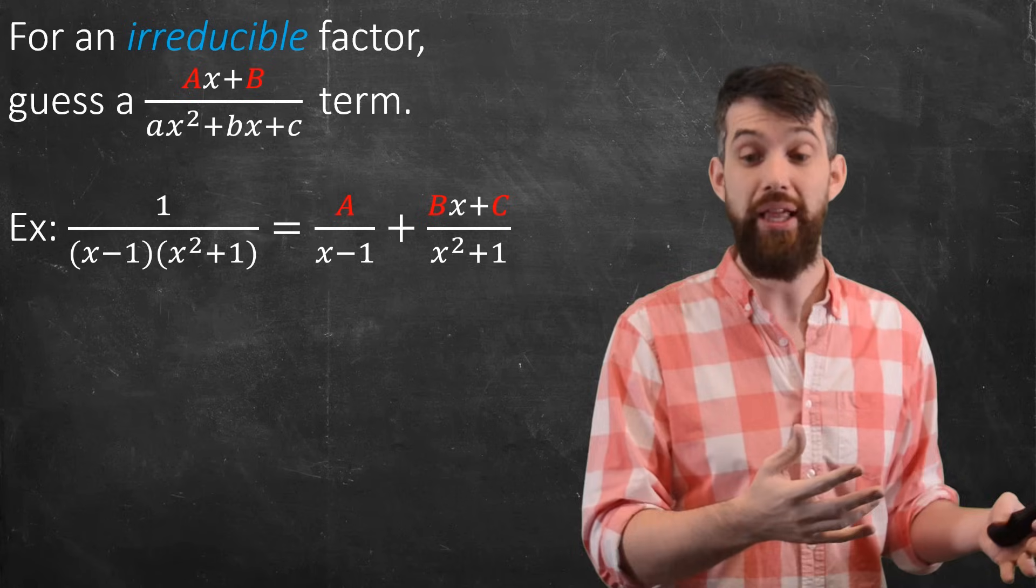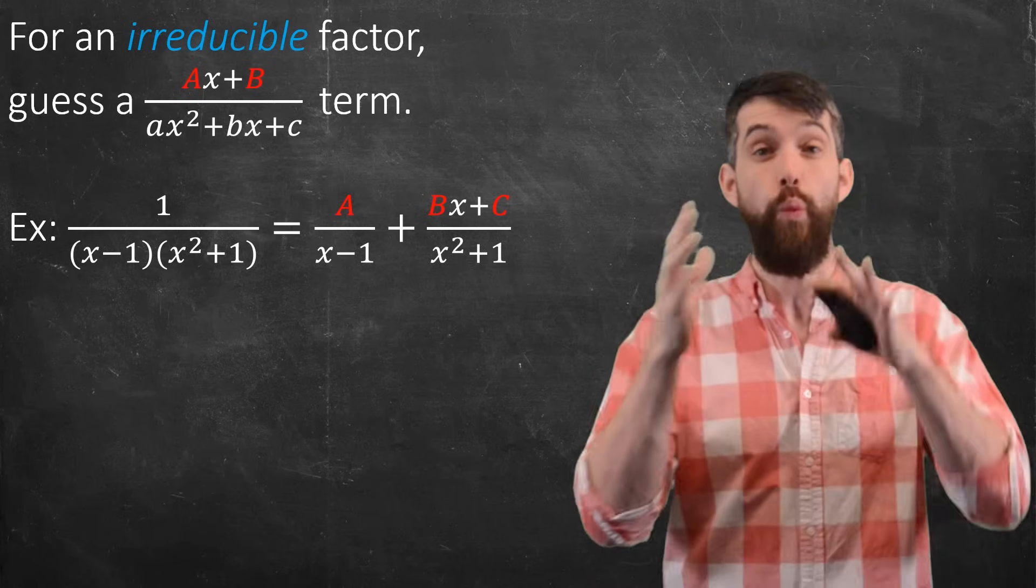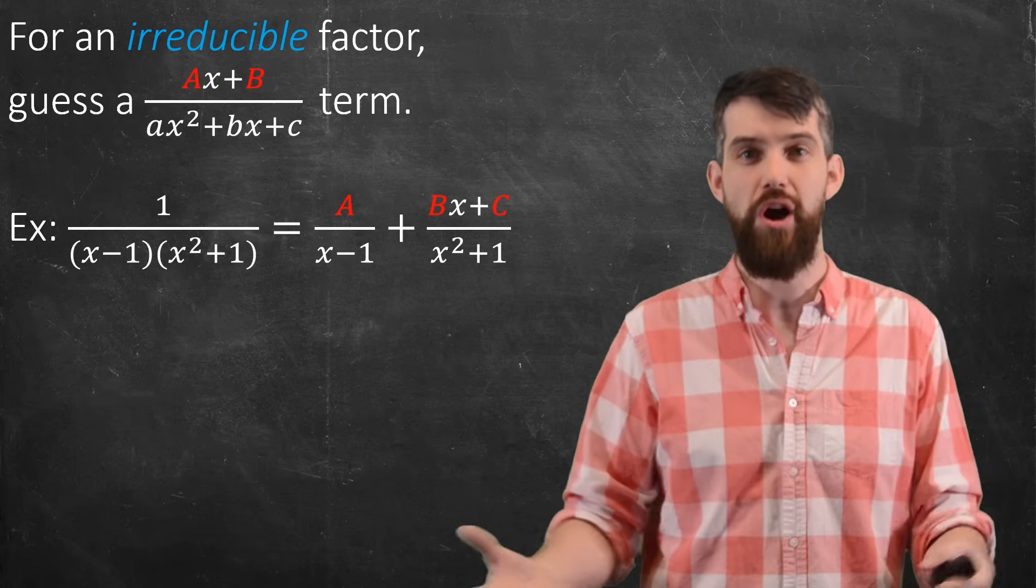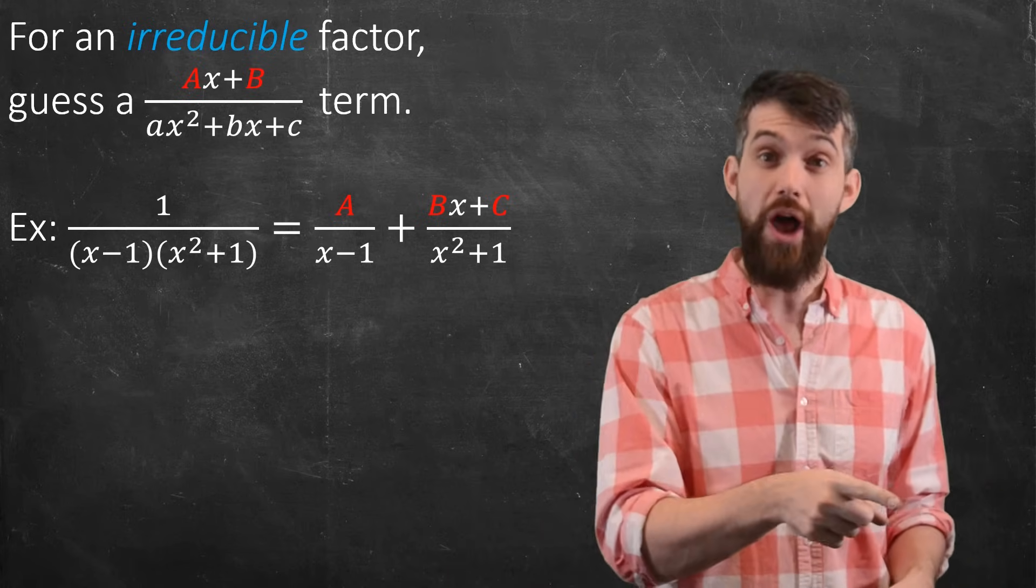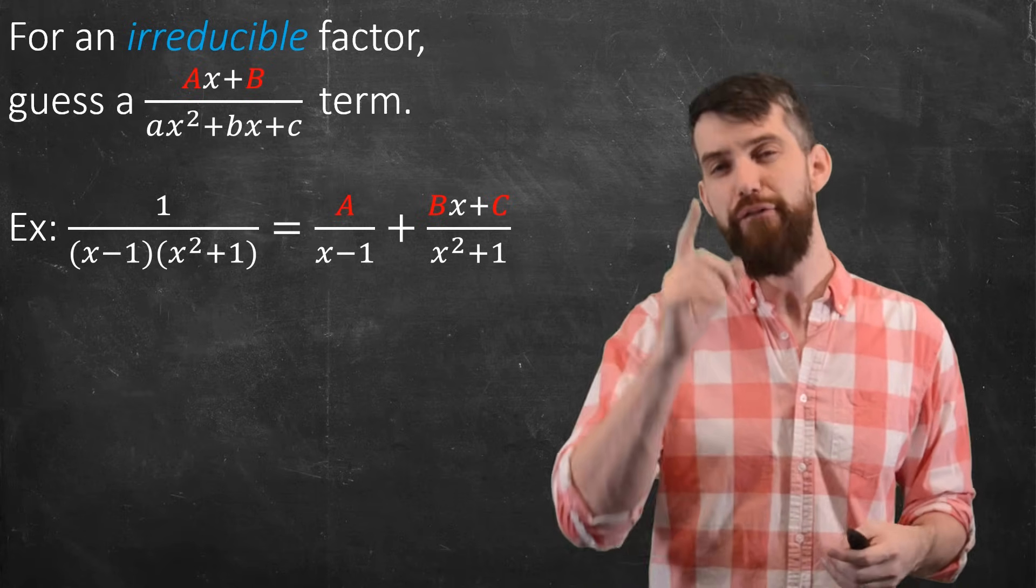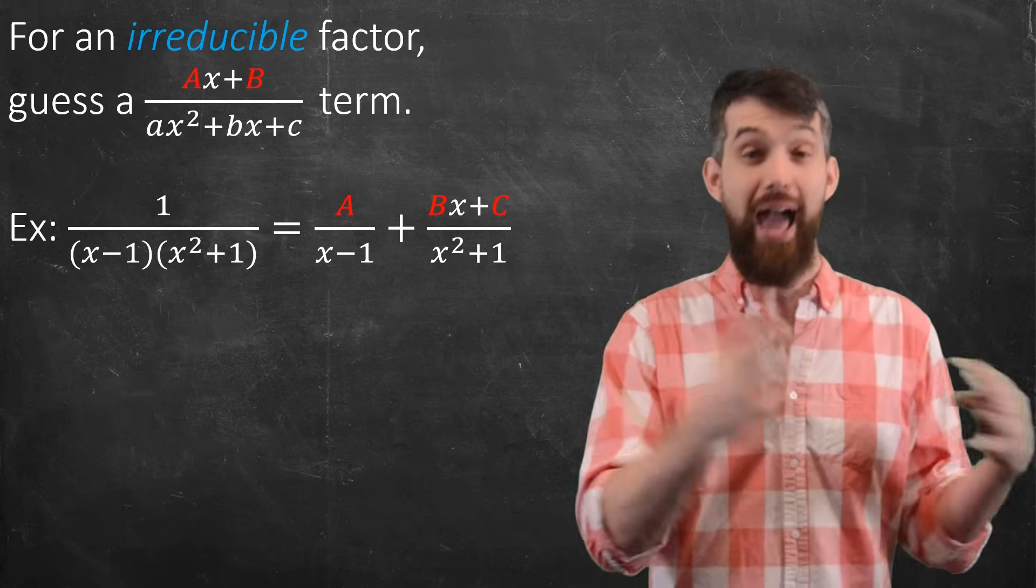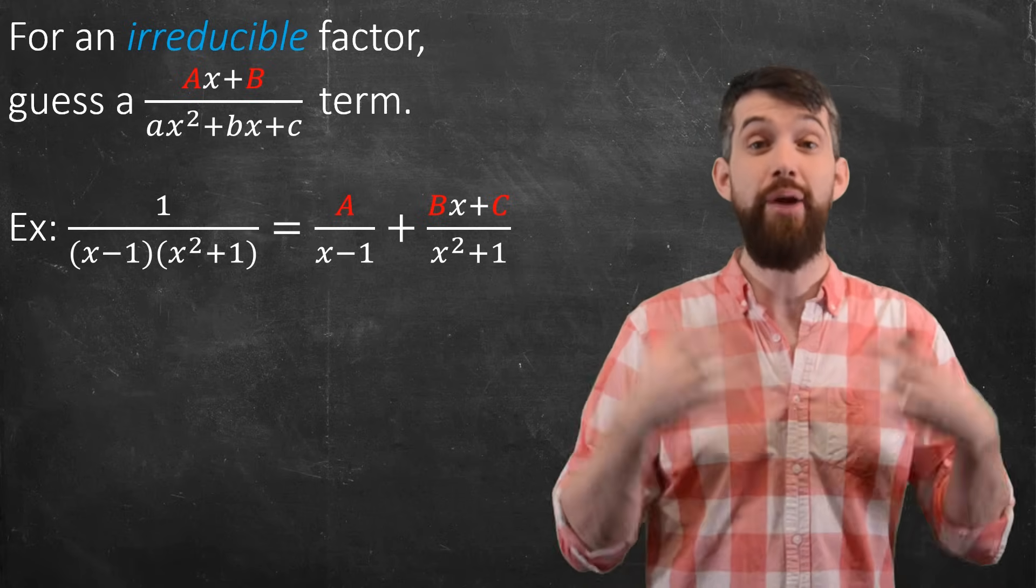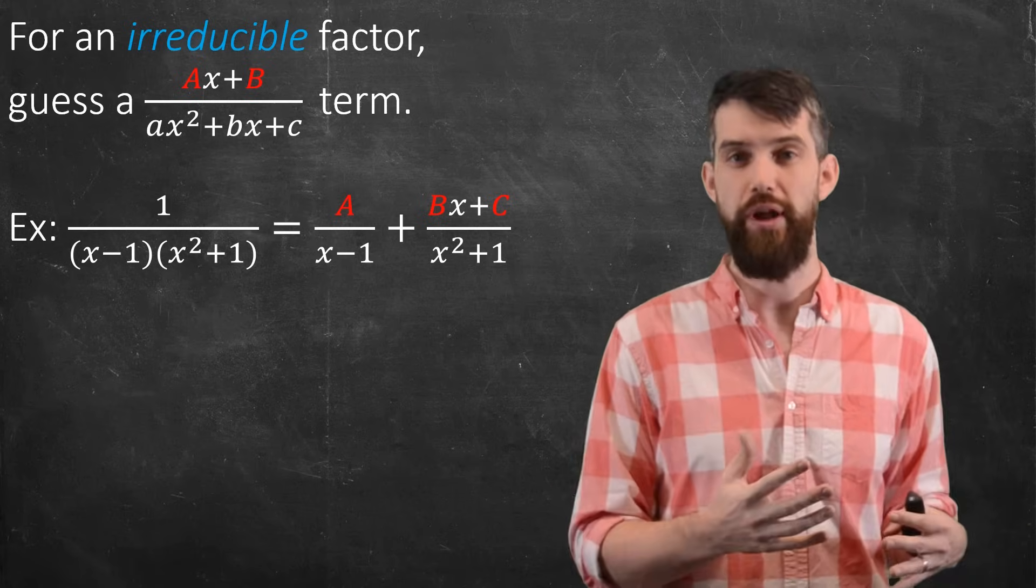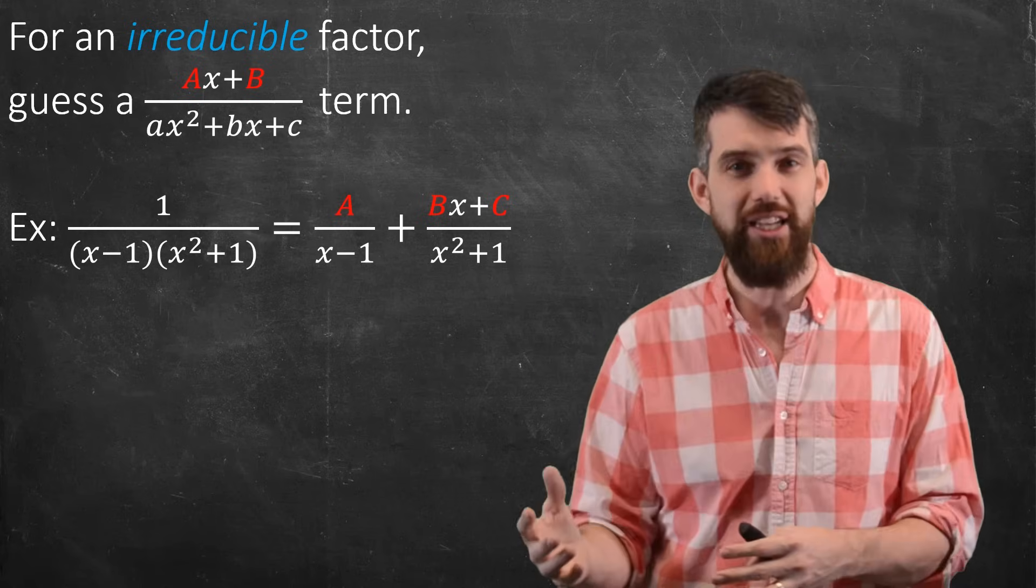As an example, in this one I have one linear and one quadratic on the bottom, and what I'm trying to do is do a partial fraction decomposition. For the linear term, the x minus 1, I just put a constant, a over x minus 1. But for the quadratic term, the x squared plus 1, I put a generic bx plus c, that is a generic linear term, up in the numerator. That's how I deal with quadratics.